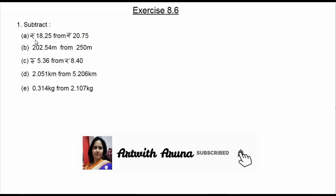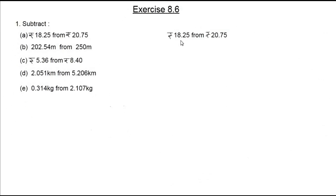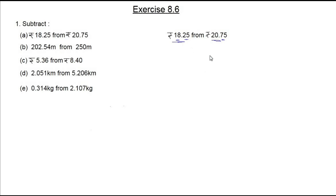The first part is: rupees 18.25 from rupees 20.75. We need to subtract the smaller number from the bigger number. First, we check the number of digits before and after the decimal point. Here we have two digits before and two digits after the decimal point in both numbers, so no need to add any zeros. Let's write down the bigger number first: rupees 20.75.